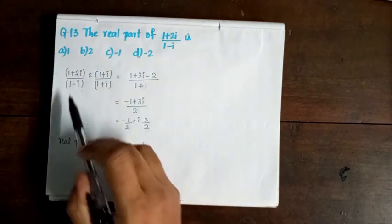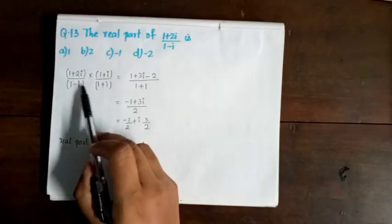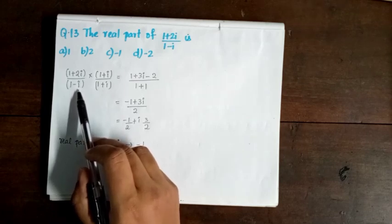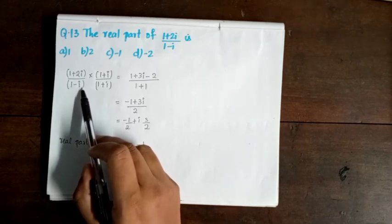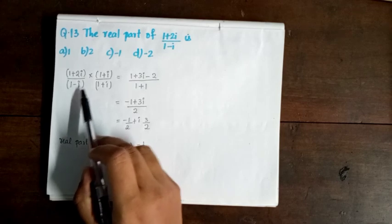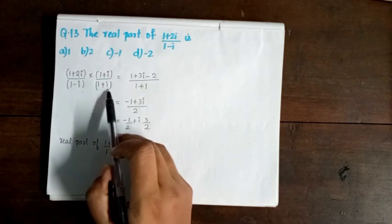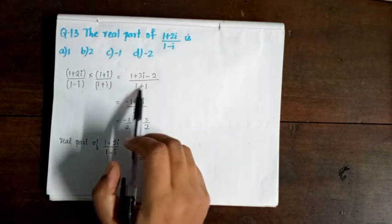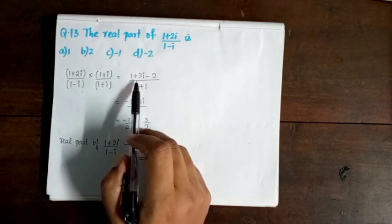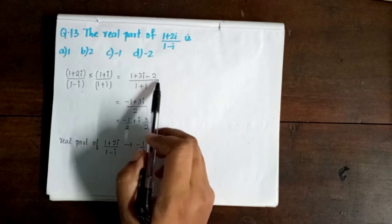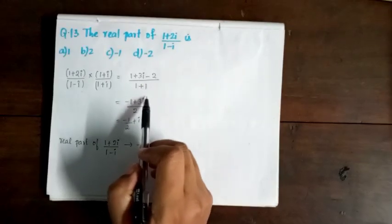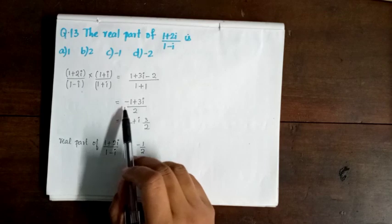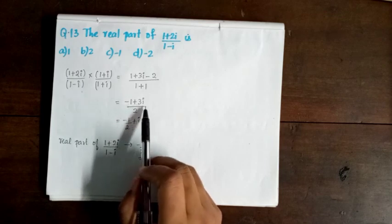Multiplying (1 + 2i) / (1 - i) by the conjugate (1 + i) / (1 + i), we simplify the numerator: (1 + 2i)(1 + i) = 1 + i + 2i + 2i² = 1 + 3i - 2 = -1 + 3i. The denominator becomes 1 + 1 = 2. So the result is (-1 + 3i) / 2.